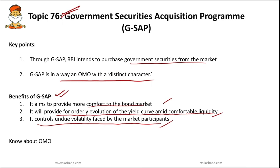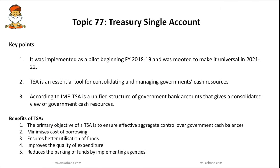You should also know what open market operations are. Open market operations are nothing but the sale or purchase of government securities to or from the market. Whenever there is excess liquidity, RBI will resort to the sale of securities and suck out rupee liquidity. Whenever liquidity conditions are tight, RBI will buy securities from the market and release liquidity into the market.